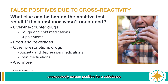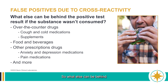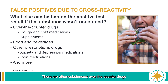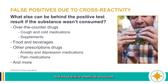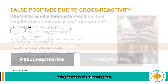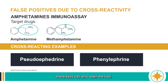At times, a sample will unexpectedly screen positive for a substance that the patient says they did not consume. So what else can be behind the positive test result if the substance wasn't consumed? There are other substances — over-the-counter drugs, food and beverages, other prescription drugs — that have similar chemical structures to the target drugs being tested in the screening test. Returning to the lock and key analogy, these keys can also open the lock.